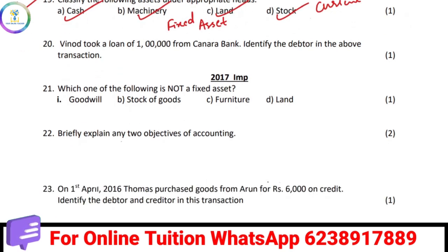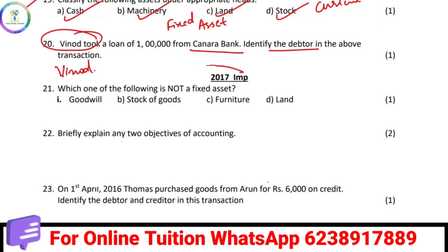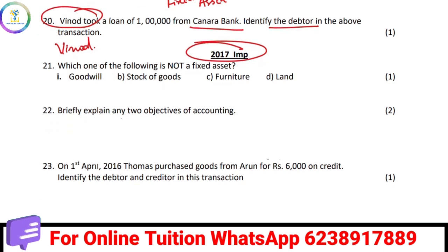Winoth took a loan of 1 lakh from Canara Bank. The bank is the creditor and Winoth is the debtor. Goodwill and stock — furniture is a fixed asset, stock of goods is a current asset.